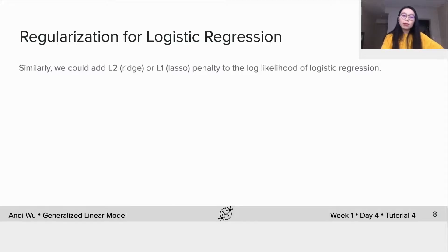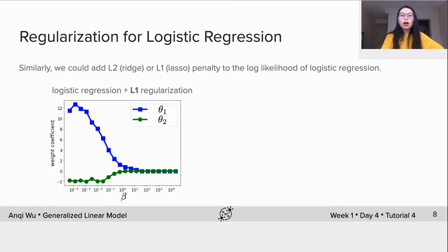Here we show another example for logistic regression plus L1 penalty. Still, we have a binary classification problem. The main difference now is that the magnitudes of these two coefficients decrease to zero, but not in a synchronous manner. Theta2 becomes zero earlier than theta1. Thus, after theta2 reaches zero, L1 achieves feature selection by throwing away the second feature.